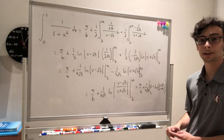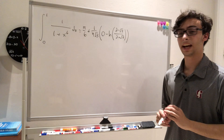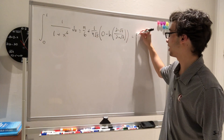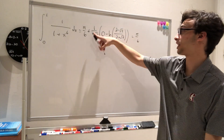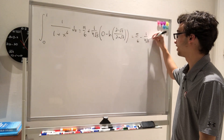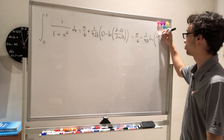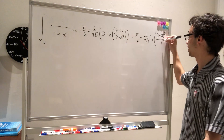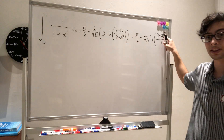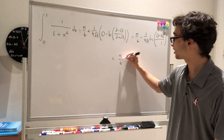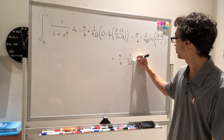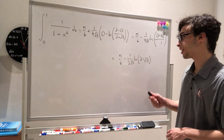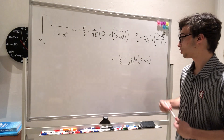Bringing this back up and simplifying: on the inside I'm going to multiply by the conjugate of 2 plus root 3. So this becomes pi over 6 minus 1 over 4 root 3 times natural log of (2 minus root 3) squared over 1, since (2 plus root 3)(2 minus root 3) equals 4 minus 3 equals 1. Using log properties, I bring the 2 to the front and cancel with the 4, giving pi over 6 minus 1 over 2 root 3 times natural log of (2 minus root 3). This is our final answer. There are many different ways to write this answer, but they should all be equivalent numerically.